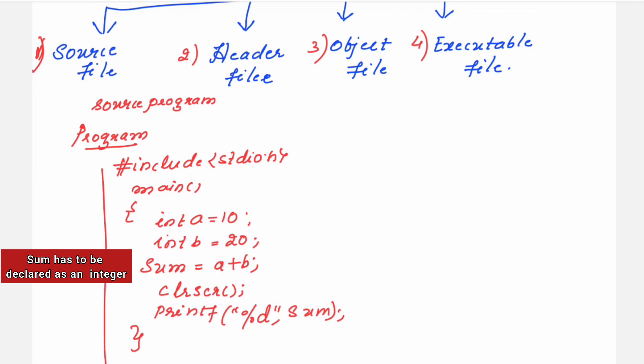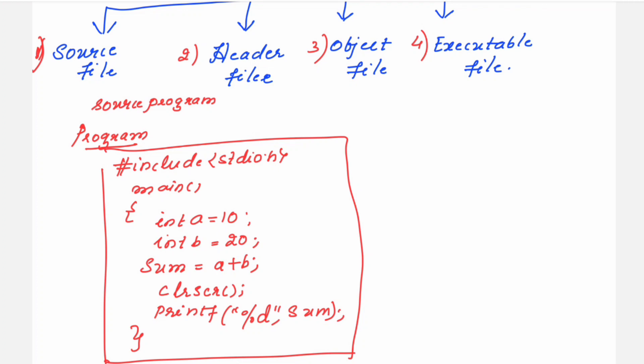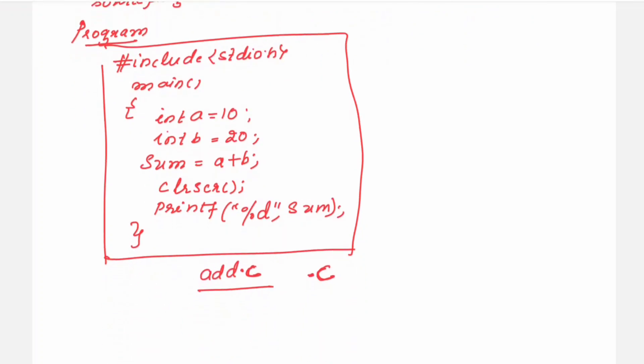This program, whatever you have written, you are giving a name to this program. So for this program, you have given the name as add and you are writing with an extension dot c. So all C programs that are written will have an extension dot c. Now this becomes your source file.